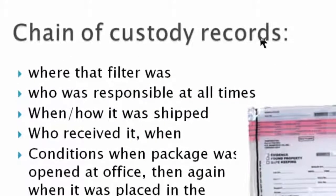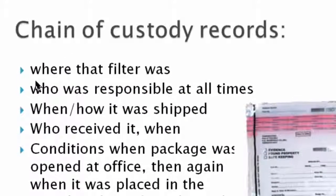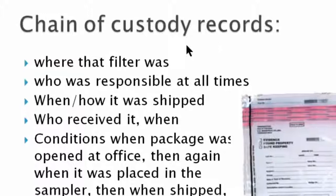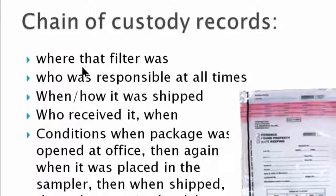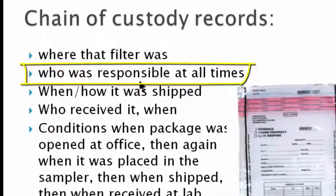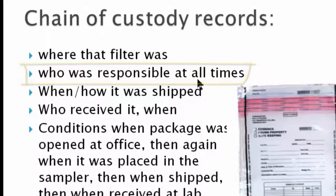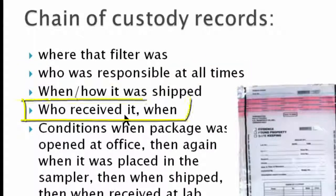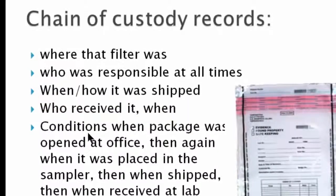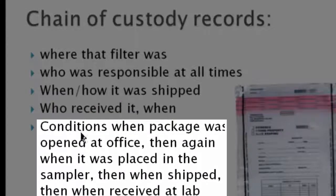Chain of custody records. The chain of custody record shows where the filter was, who was responsible for it at all times, when and how it was shipped, who received it, when they received it, and what the filter looked like.